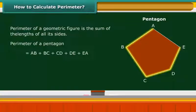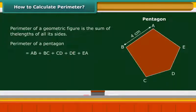DE and EA are: AB as 4 cm, BC as 5 cm, CD as 3 cm,